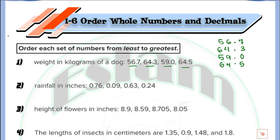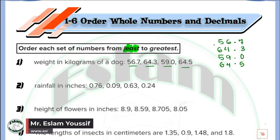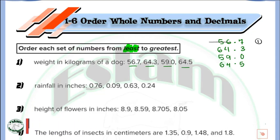Now we need to arrange from the least to the greatest — that means we need to find the smallest number. To find the smallest number, look at the smallest whole number. The smallest whole number here is 56, so that will be the first number. After that, look at the next numbers — 59 will be the next one, that will be the second, because we are arranging from smallest to greatest.